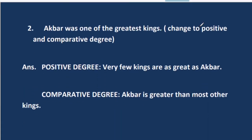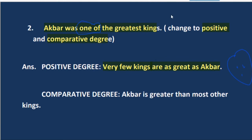Moving to the second sentence: Akbar was one of the greatest kings. We have to change it into both positive and comparative degree. Note that it says 'one of the greatest,' which means if there are 50 kings total, maybe 2 to 3 are as great as Akbar. So in the positive form, we use 'very few' and write: very few kings are as great as Akbar.